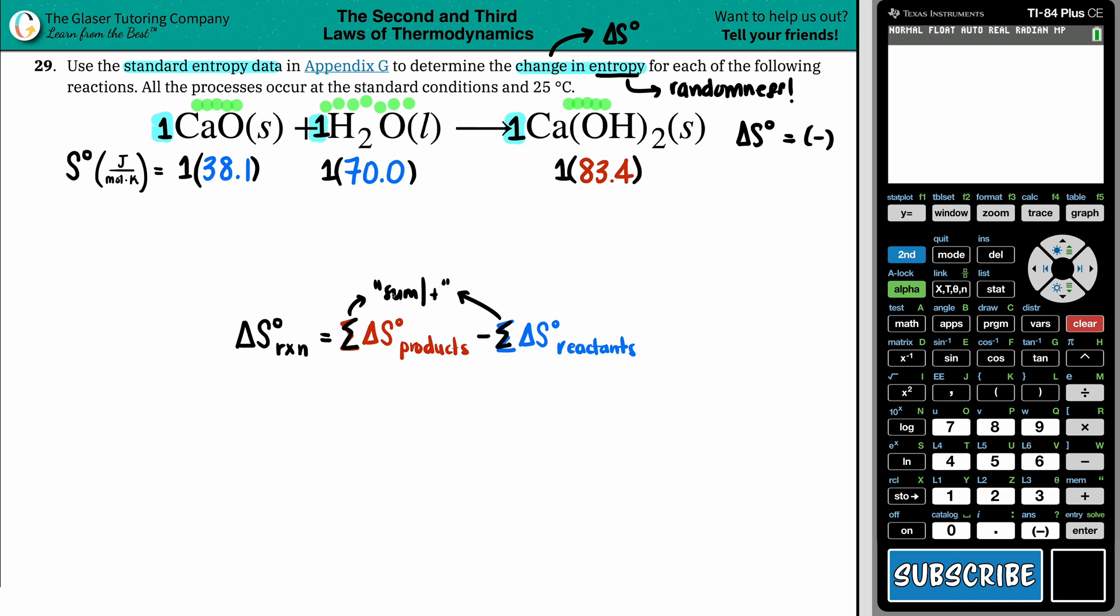Now, we just have to sum them up. Literally, in the balanced equation, it's CaO plus H2O. So 38.1 plus 70. On the product side, since you only have the one compound, you don't have to add anything up. So the final amount for your products would be the 83.4. But now let's go to calculator and figure out what the sum of 38.1 plus 70 is.